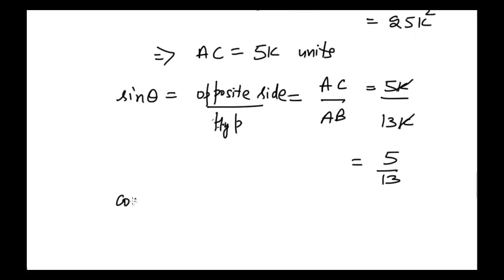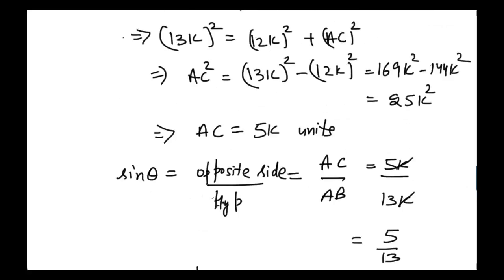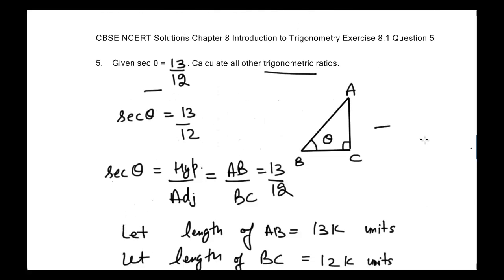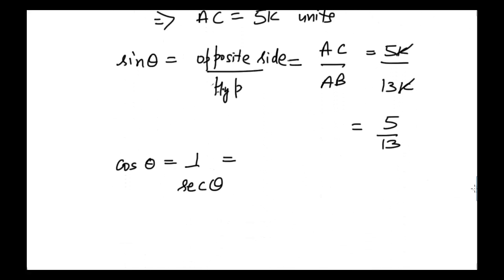We know that cosine of theta is the reciprocal of secant of theta, and we are given the value of secant theta, so we can directly write cosine theta equal to 12 divided by 13, because it is the reciprocal of secant theta.